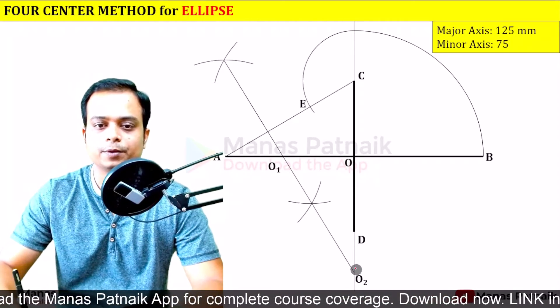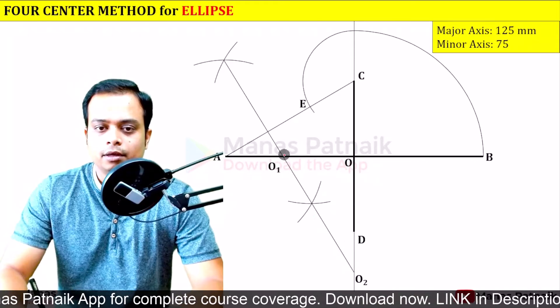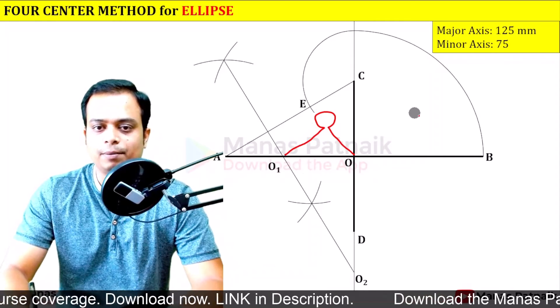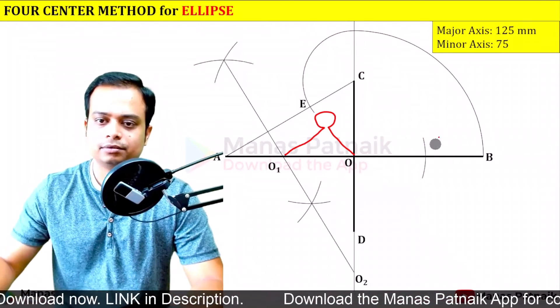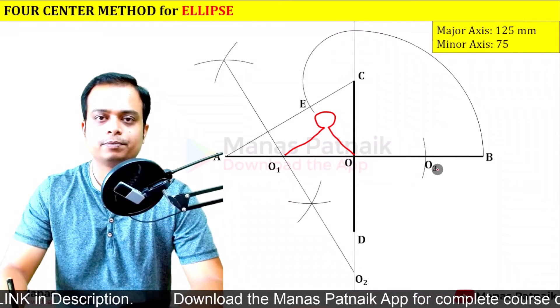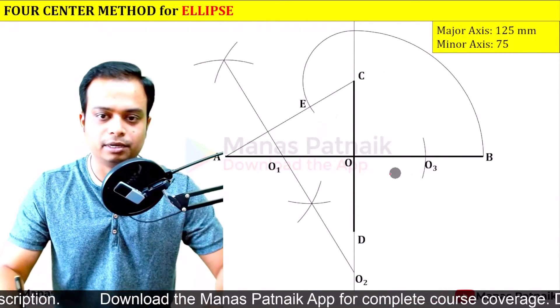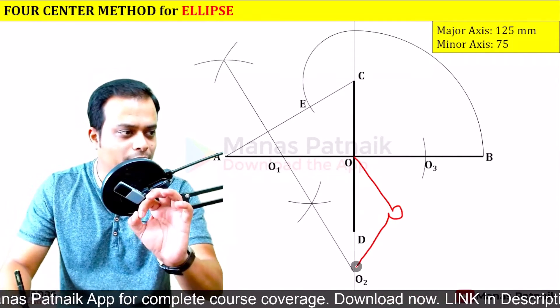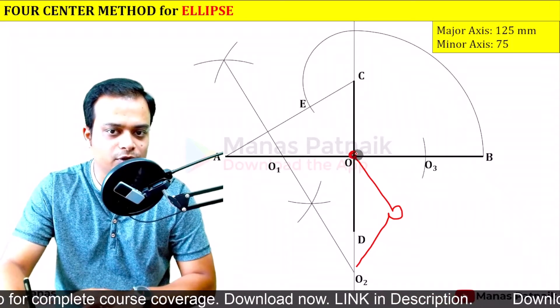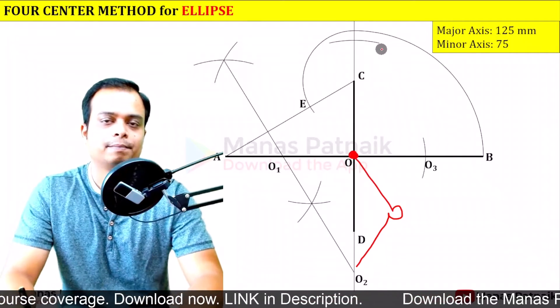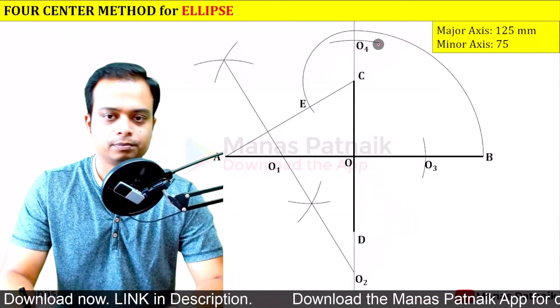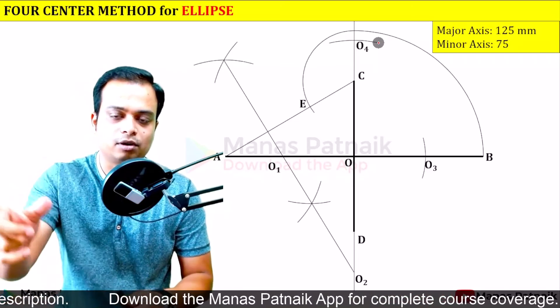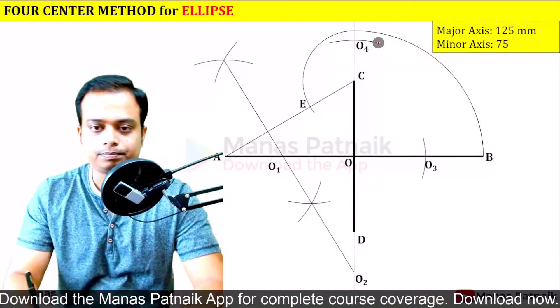So we've got two centers, O1 and O2. With O as the center and with O-O1 as the radius, flip it in the other direction and cut an arc over here. Once you do that, what you have is another center O3. Similarly, with O-O2 as the radius, with O as the center, flip it this way. This is going to give you O4. Now these are the four centers which we'll be using along with the compass to create the entire ellipse.